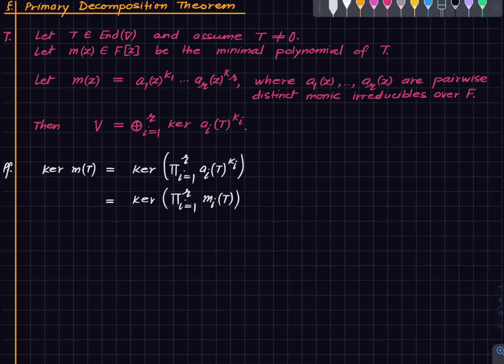So what have we done? We are just saying that we are just defining m_i(x) as a_i(x) to the power k_i. When we define things this way, since a_i's are pairwise relatively prime, and because they are distinct monic irreducibles, a_i's are pairwise relatively prime and hence their exponents are also pairwise relatively prime.